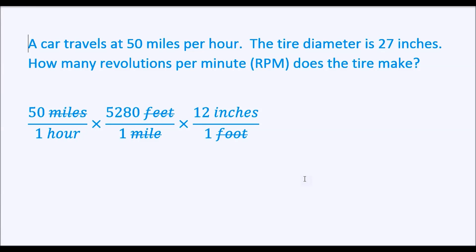So we're going to convert inches per hour to revolutions per hour by multiplying by one revolution for every pi times 27 inches, which is the circumference. And you'll see the inches cancel out. Now we have revolutions per hour.